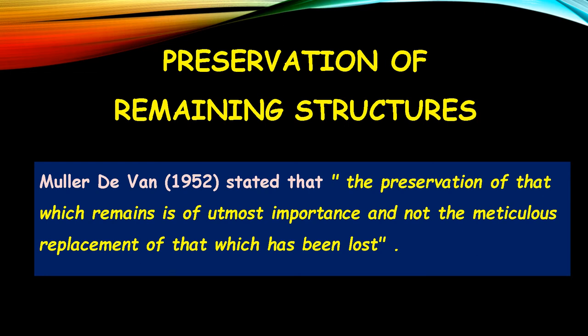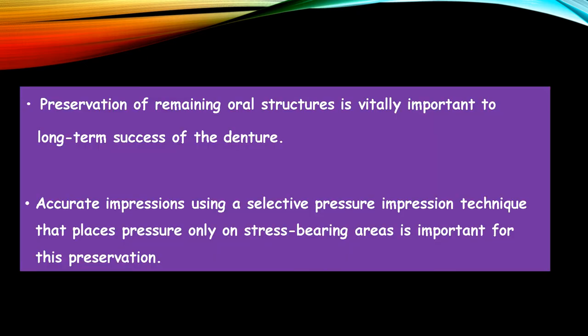The first objective is preservation of remaining structures. According to Muller D. Van in 1952, he stated that the preservation of that which remains is of utmost importance, and not the meticulous replacement of that which has been lost. Preservation of remaining structures is vitally important to the long-term success of the denture.